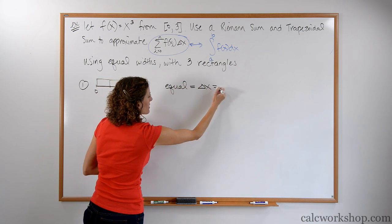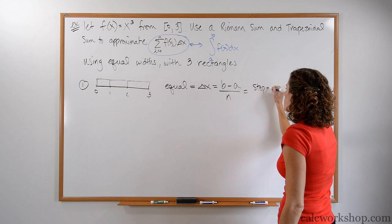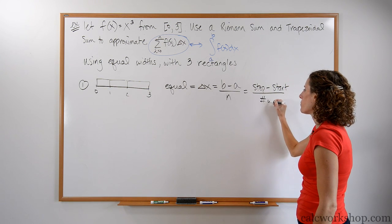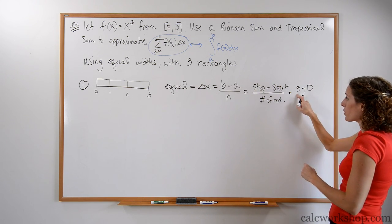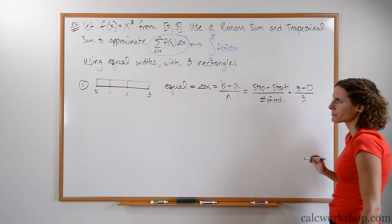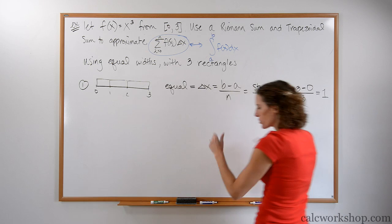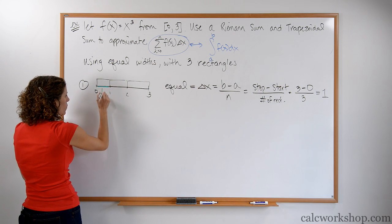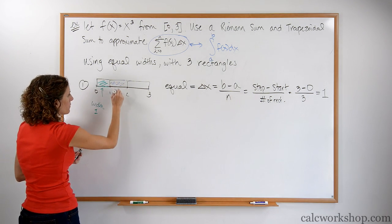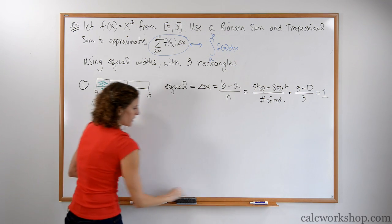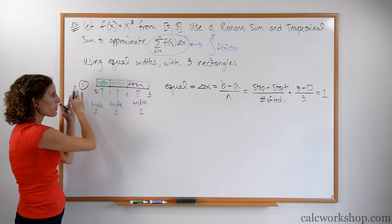Delta x is always going to be b minus a over n — your stop minus your start over the number of rectangles. We stop at 3, start at 0, and want 3 rectangles. So each one has to be a width of 1, which is what you're seeing here — the width of the green, blue, and purple rectangles is each one.